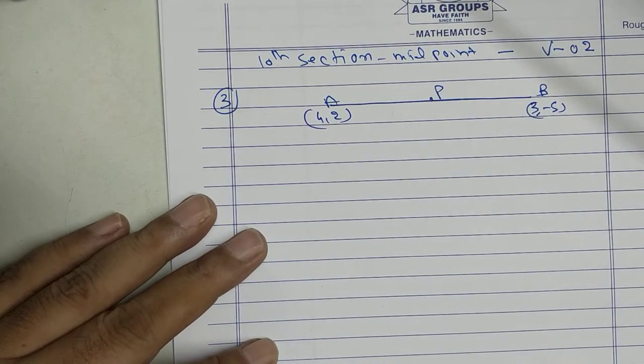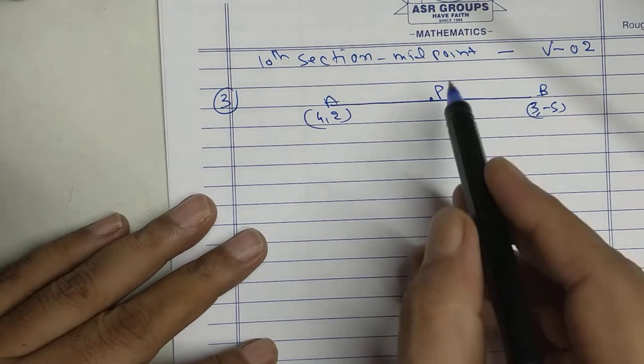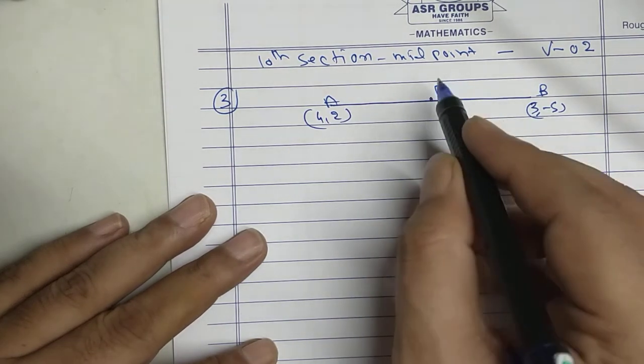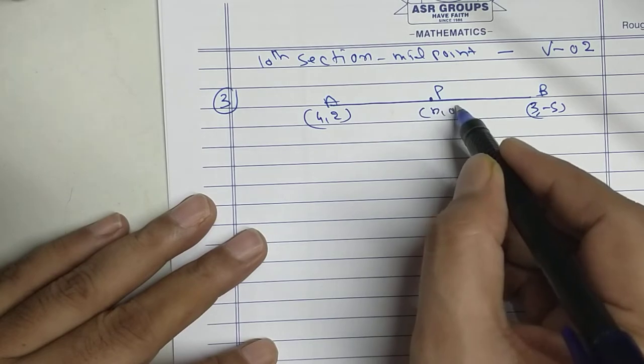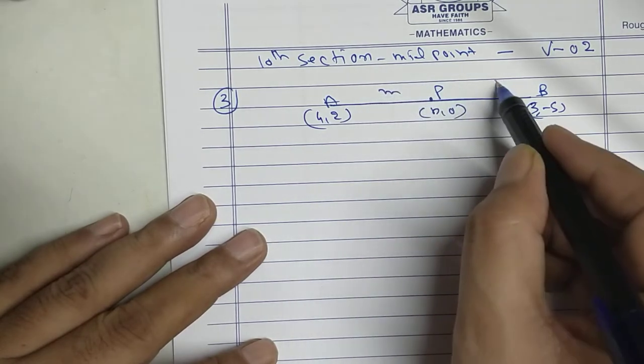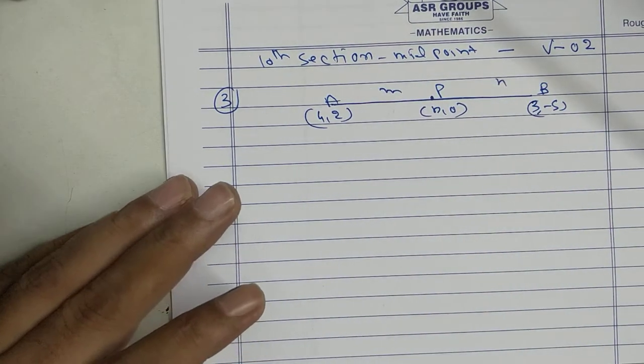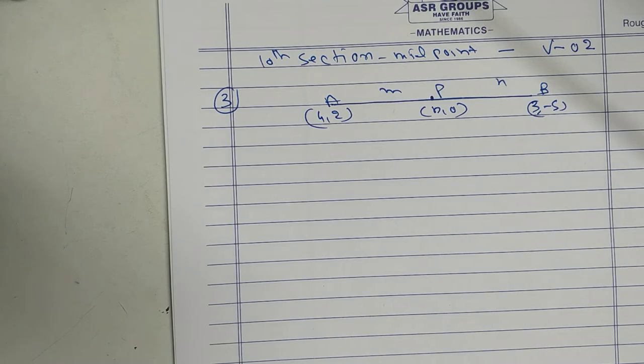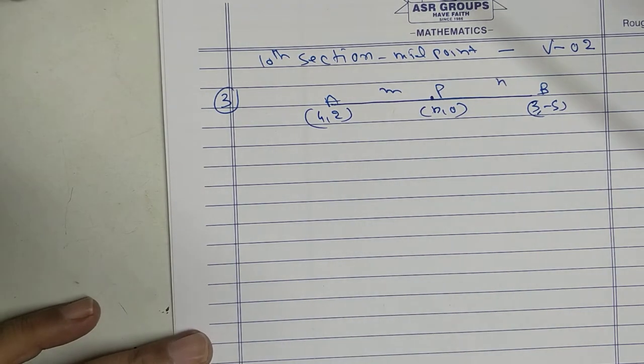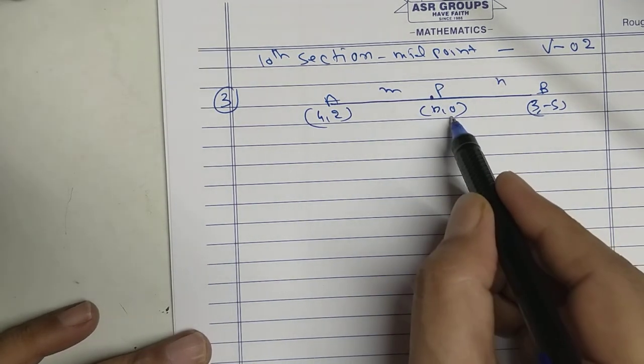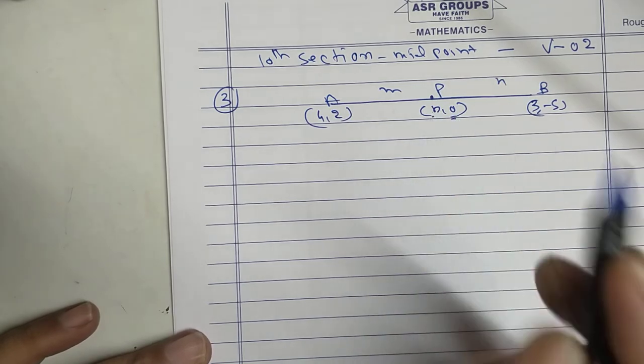A, B divided by x axis means P lies on x axis. So this point will be x and 0. Ratio I don't know. First I will find the ratio then I will find the x. Since I know y value, x unknown.